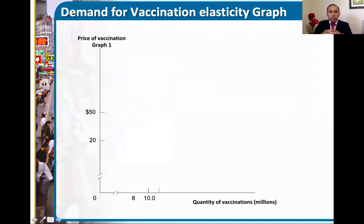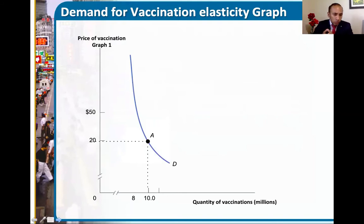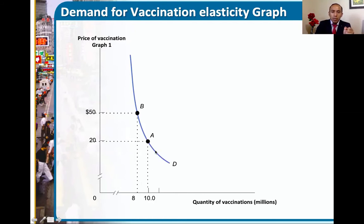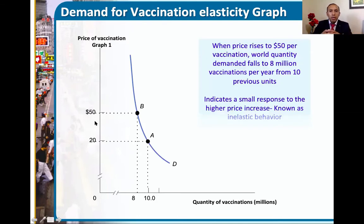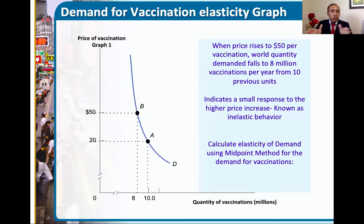If we look at the demand for vaccination — it could be the COVID-19 vaccine, malaria vaccination, or any important vaccine — at the current price of $20, we have 10 million consumers that need the vaccine. But if there's an increase in the price from $20 to $50, there's going to be a slight change in quantity demanded from point A to point B: quantity demanded drops from 10 to 8 million. The price increased significantly more, yet consumer response was small. This indicates inelastic behavior.